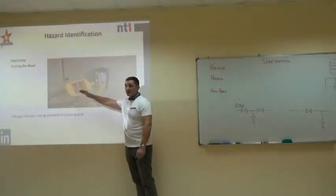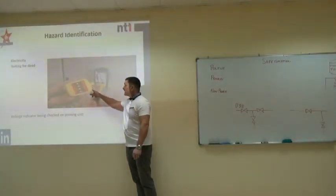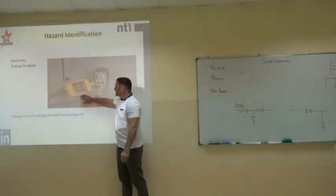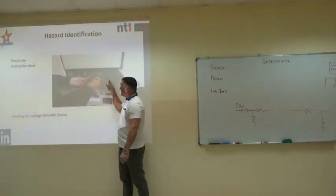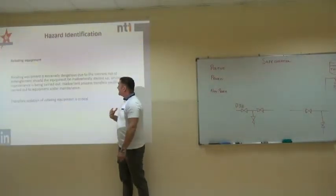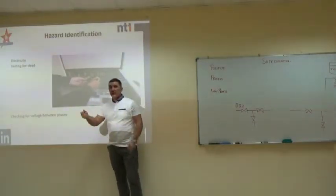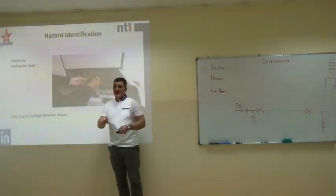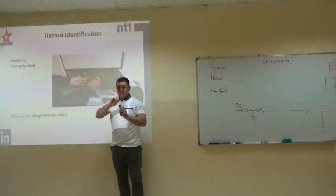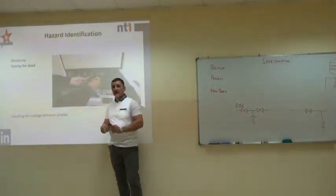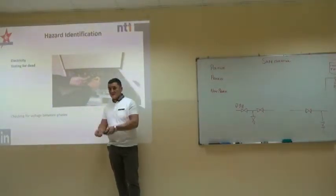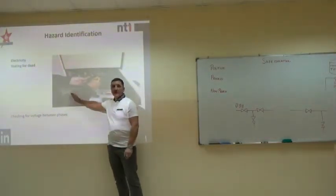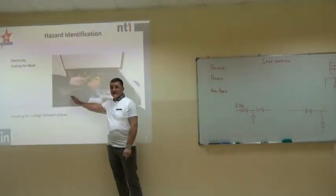Testing for dead: the electrician should test his testing unit on the proving unit, then check across each phase and to earth, and then go out in the field and test for dead on the pump. Best practice — if they're isolating the pump, he should take back each of those phases to the shield, so if somebody inadvertently reintroduces the power it will blow the fuse. You must make sure the electrician goes out in the field and tests for dead. He might have isolated the wrong piece of equipment — there have been many accidents because of that.